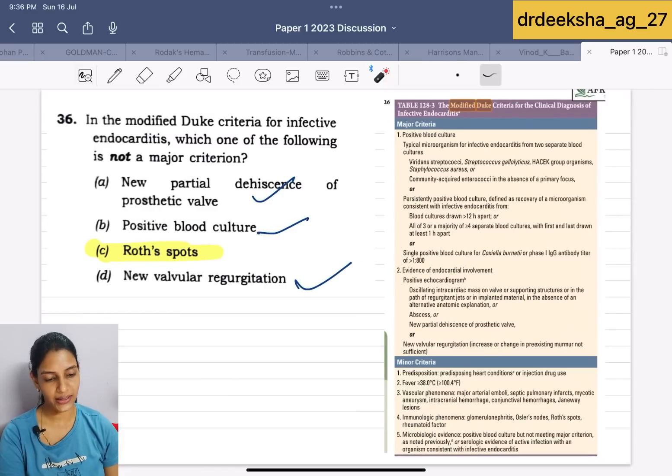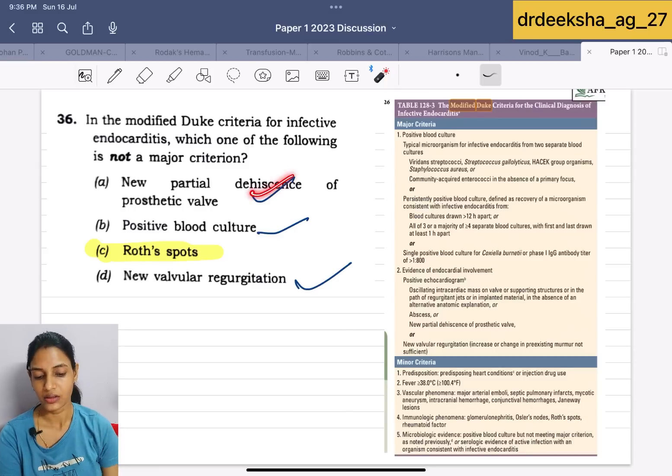Next is modified Duke criteria. Modified Duke criteria, we have major and minor criteria. In major criteria, we should have the positive blood culture and there should be the evidence of endocardial involvement. Either we should have positive echocardiogram or new partial dehiscence of prosthetic valve or new valve regurgitation, while Roth spots are the minor criteria. A, B, D are true. They were asking not a major criteria. The answer is Roth spots.